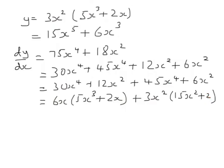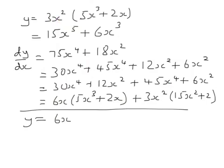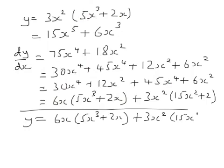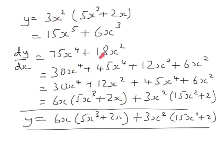So the obvious way of doing this question gives that answer. Another way of doing this question is to differentiate 3x squared and leave 5x cubed plus 2x alone, and then to leave 3x squared alone and differentiate that. So this is another way of doing the same question. Now you'll undoubtedly be saying, well surely the first method is quicker — and it is. But I'm demonstrating a rule which in lots of situations is much quicker. We'll look at that in a minute.